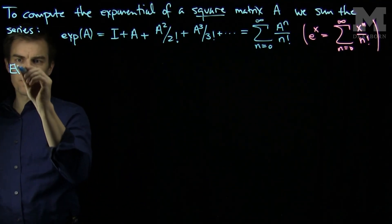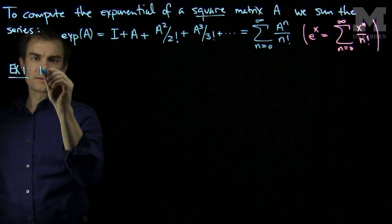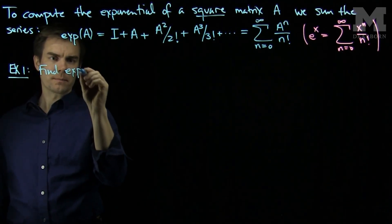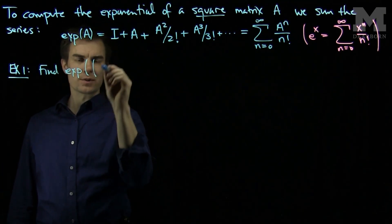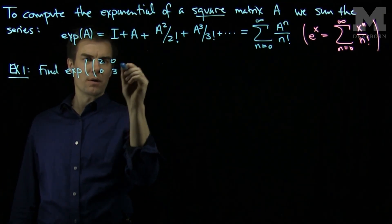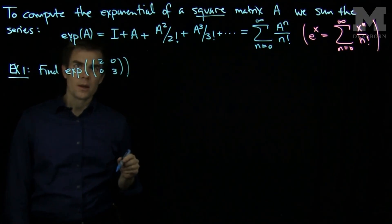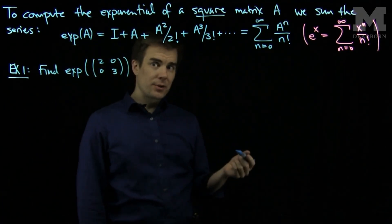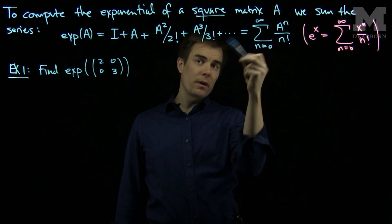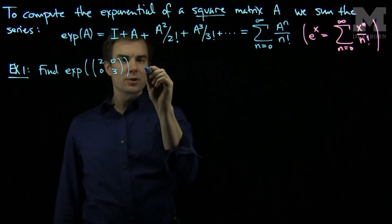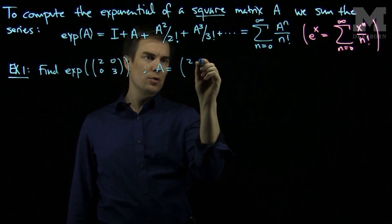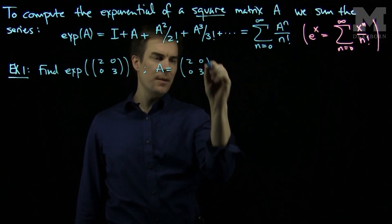Here's the first example. Let's find the exponential of the matrix [2, 0, 0, 3]. In order to compute the exponential of this matrix, I will need to find every power of the matrix in question. So if I let my matrix A be [2, 0, 0, 3], we can compute A squared.